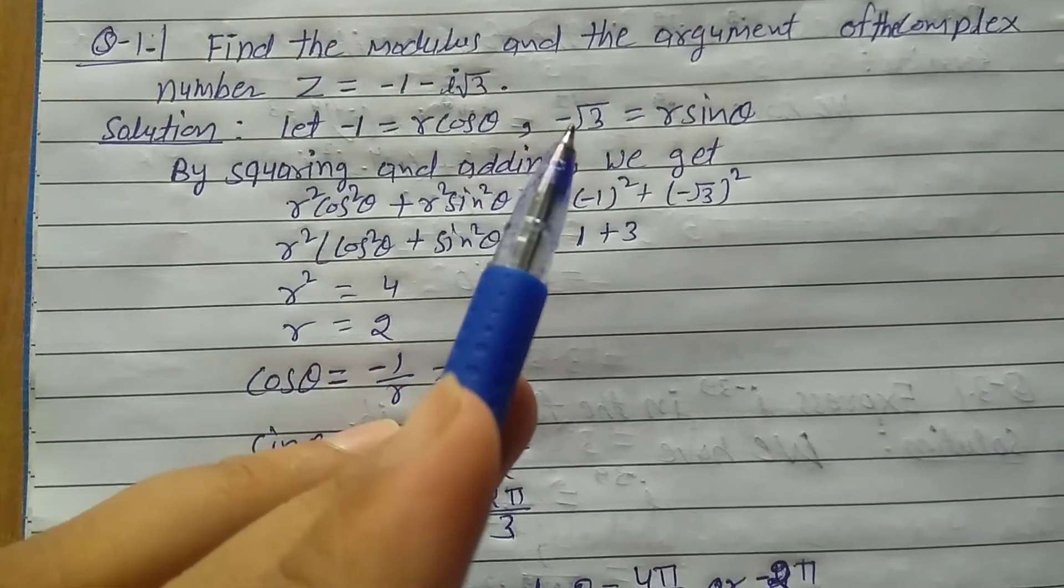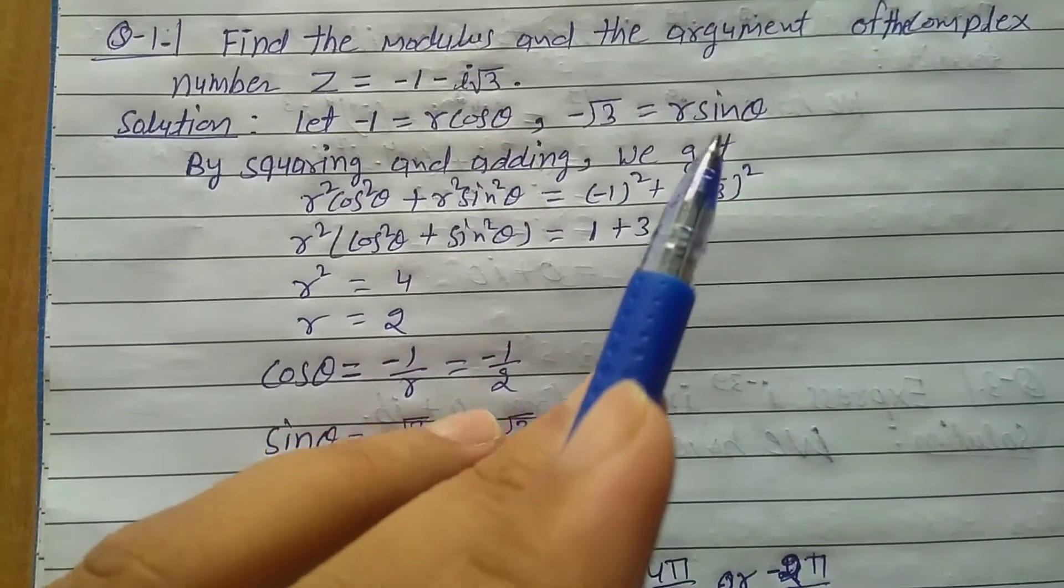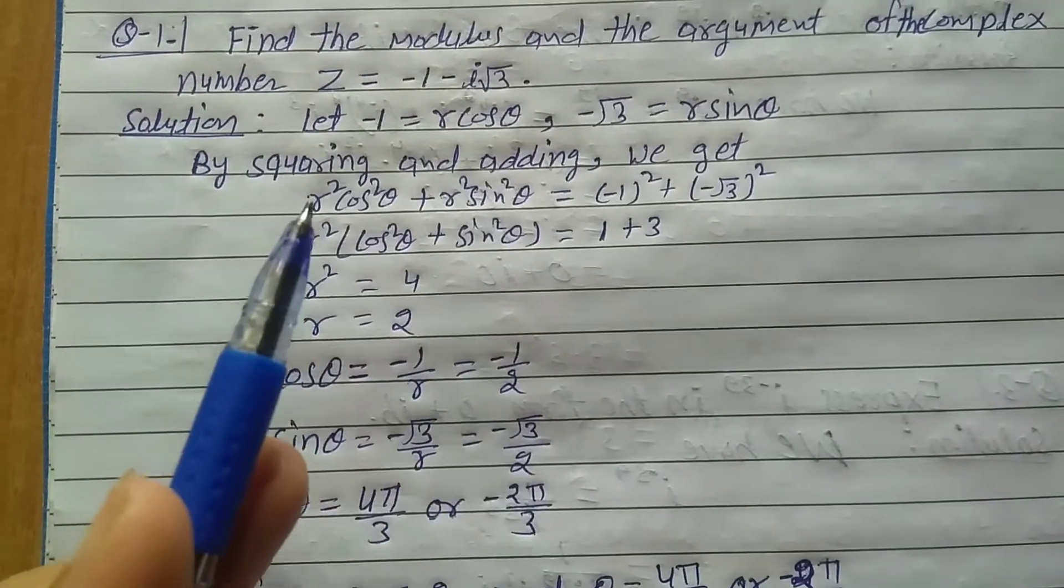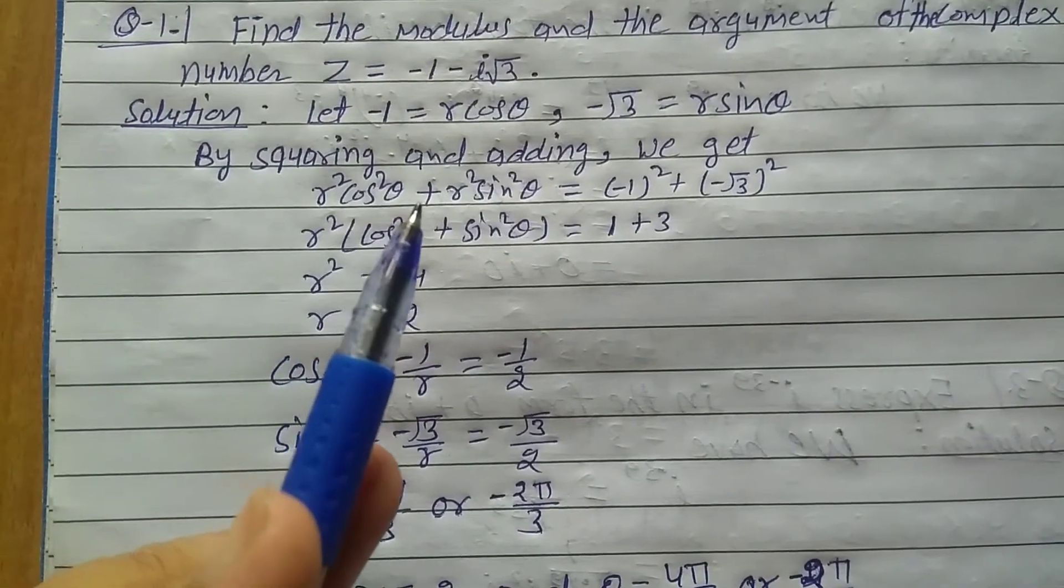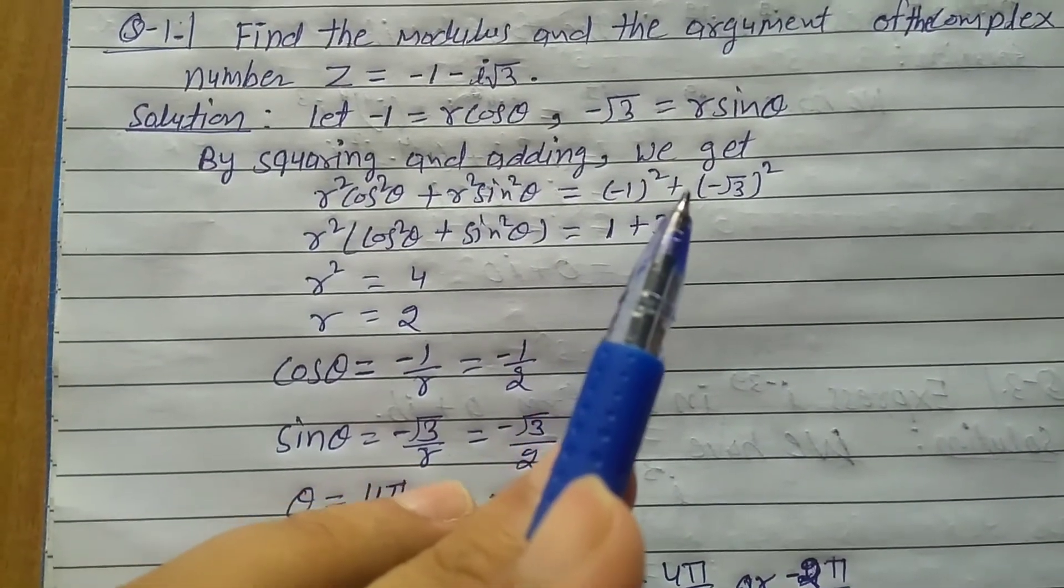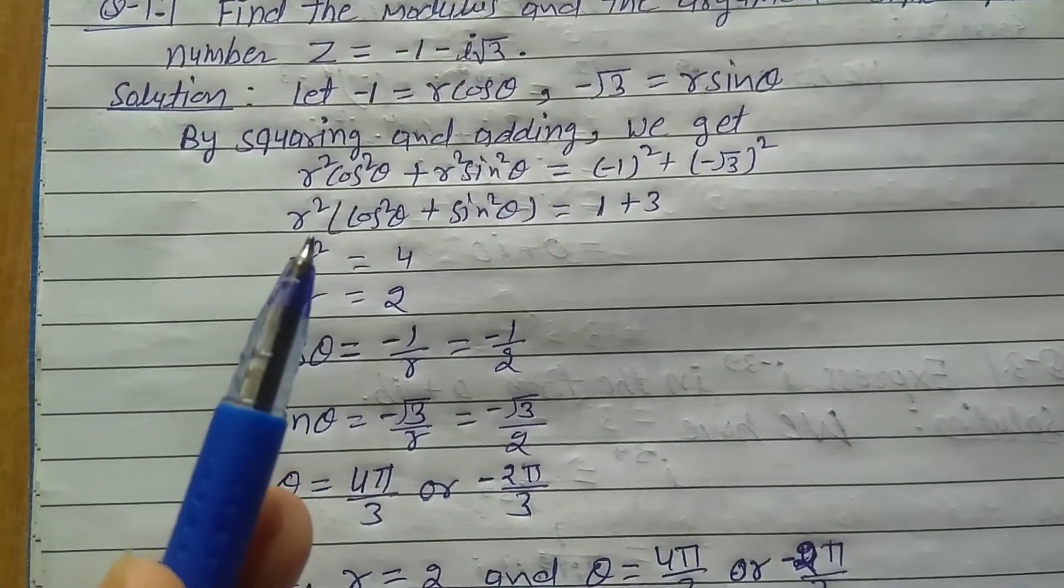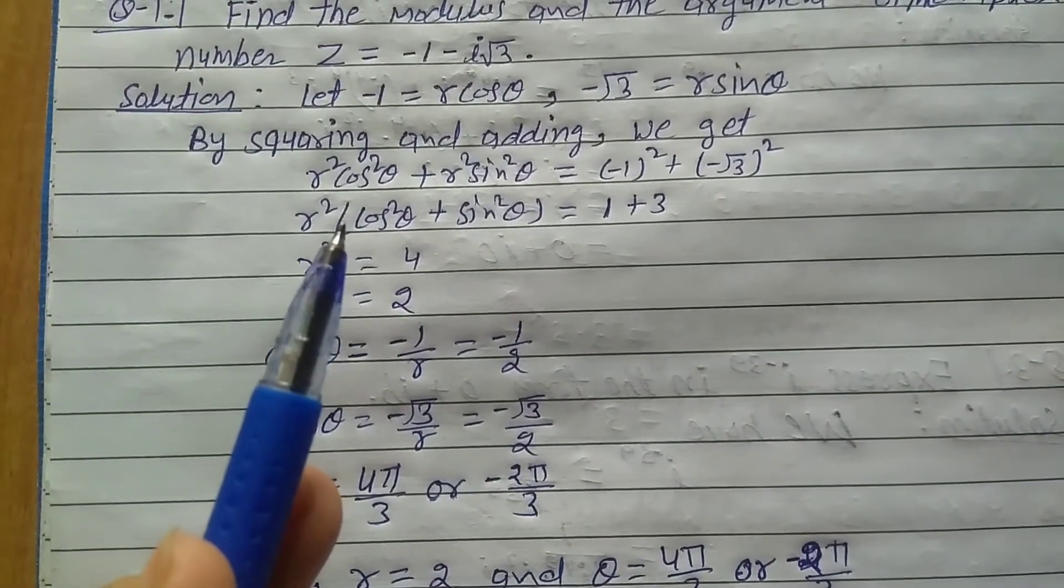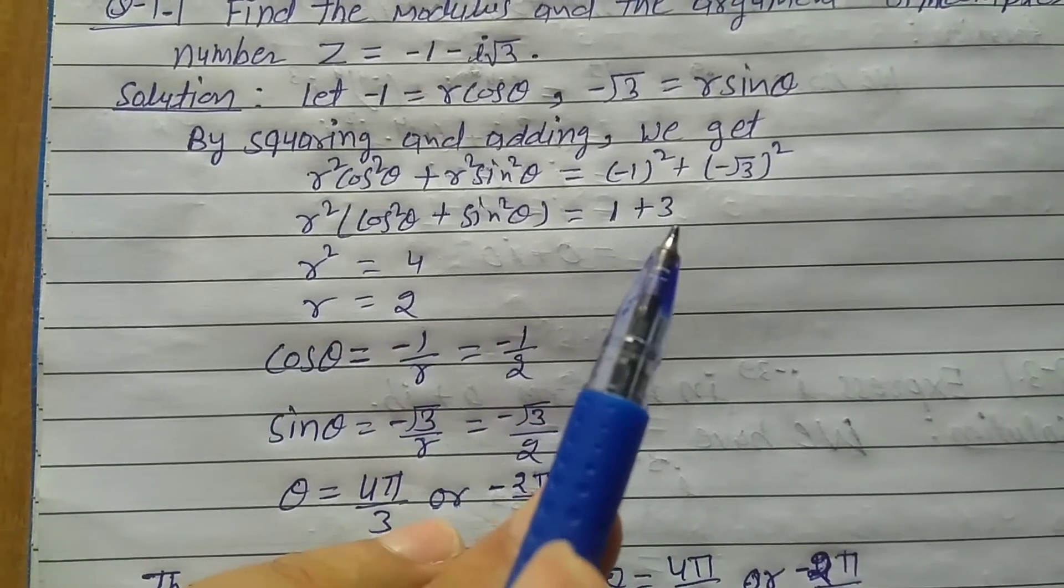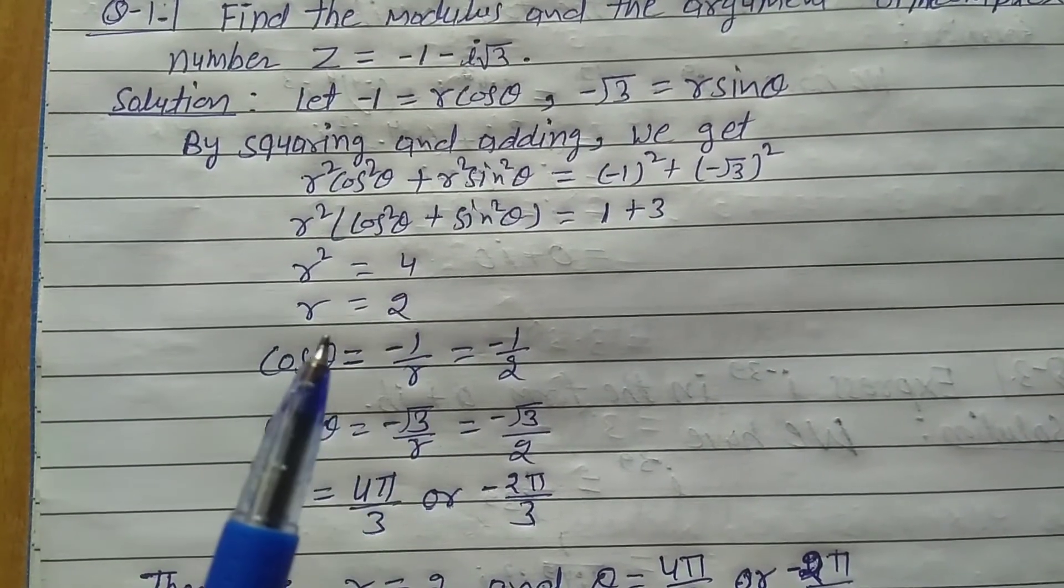By squaring and adding, we get r² cos² θ + r² sin² θ = (-1)² + (-√3)². Taking r² common: r²(cos² θ + sin² θ) = 1 + 3. Since cos² θ + sin² θ = 1, we have r² = 4, so r = 2.